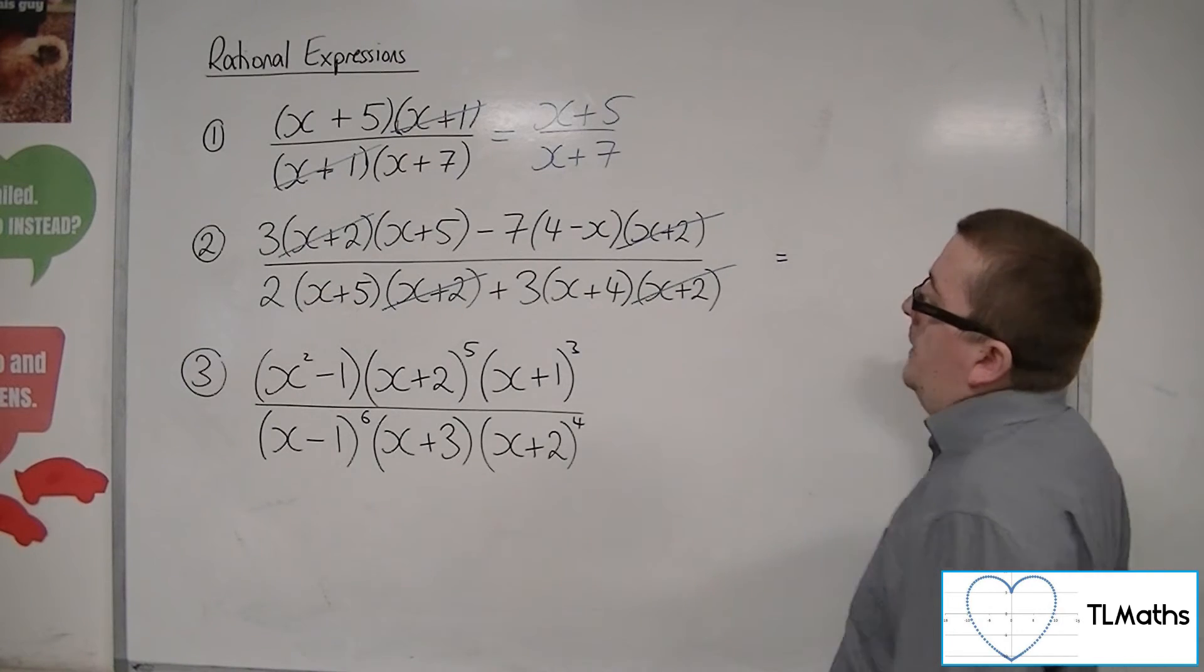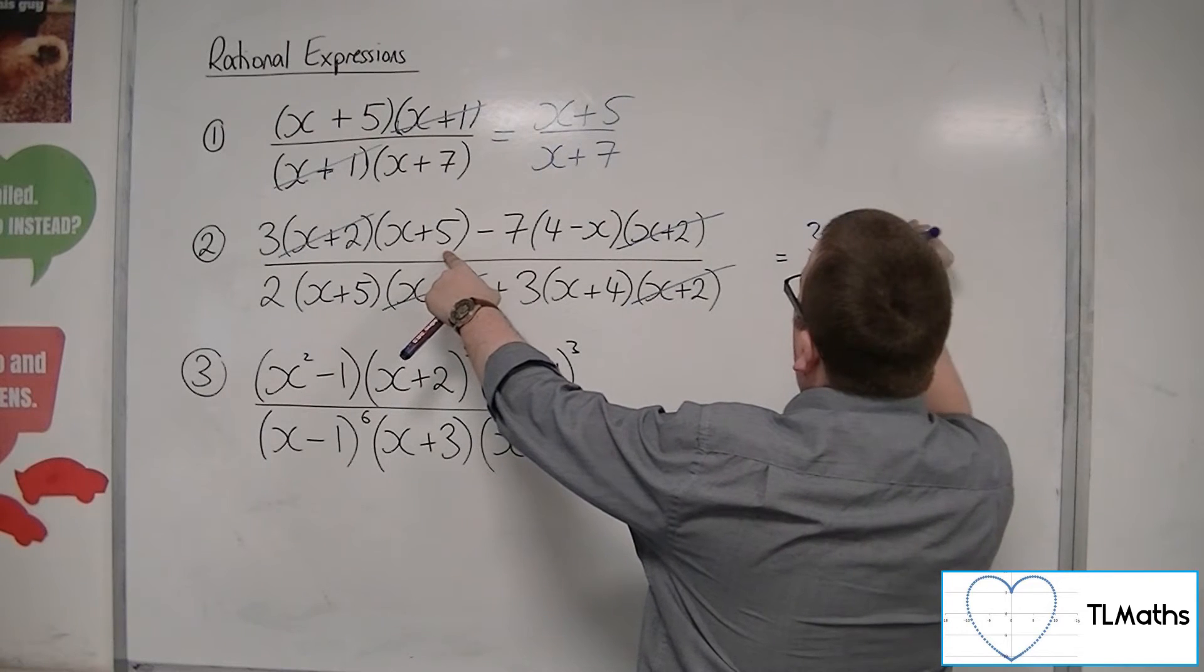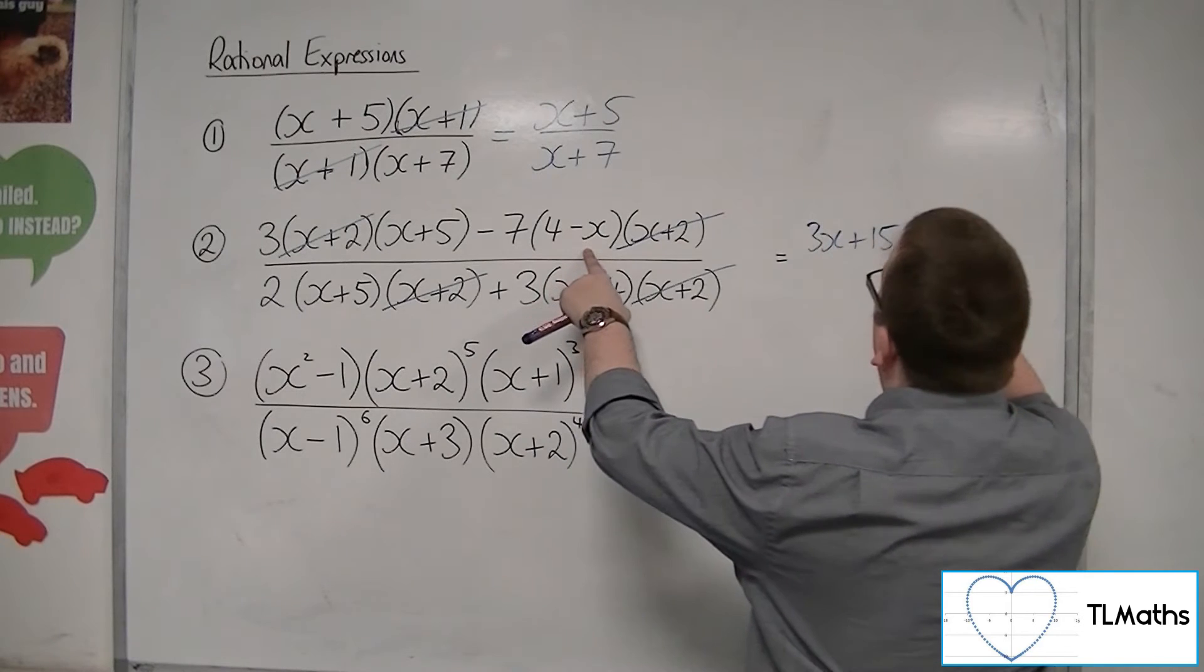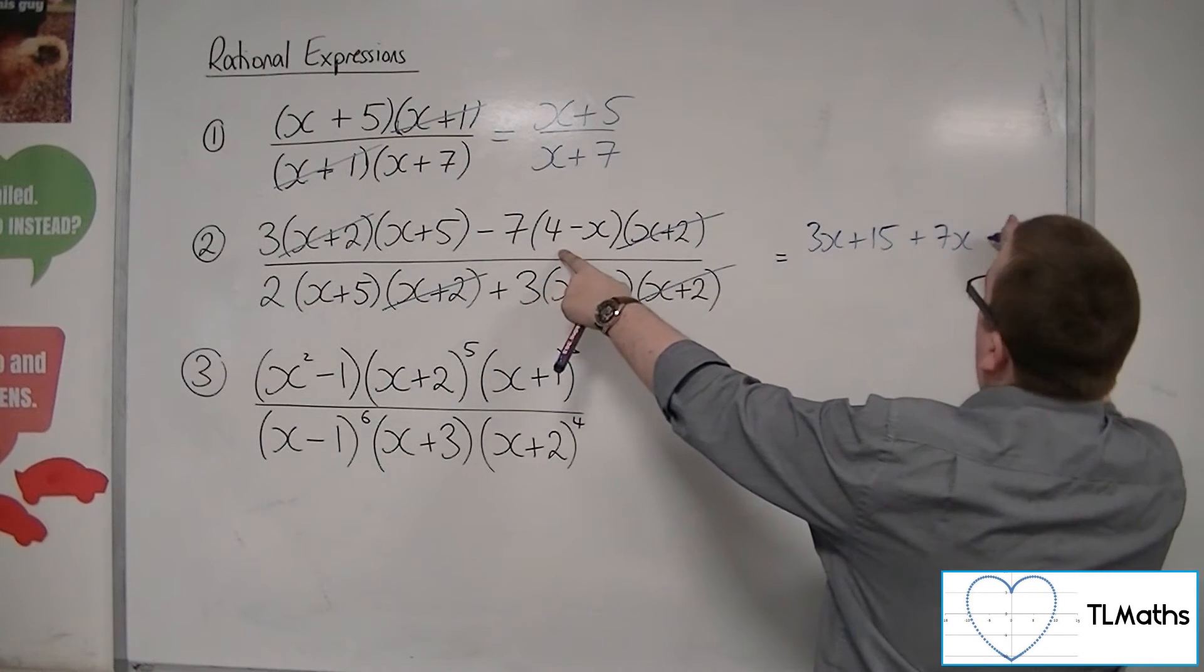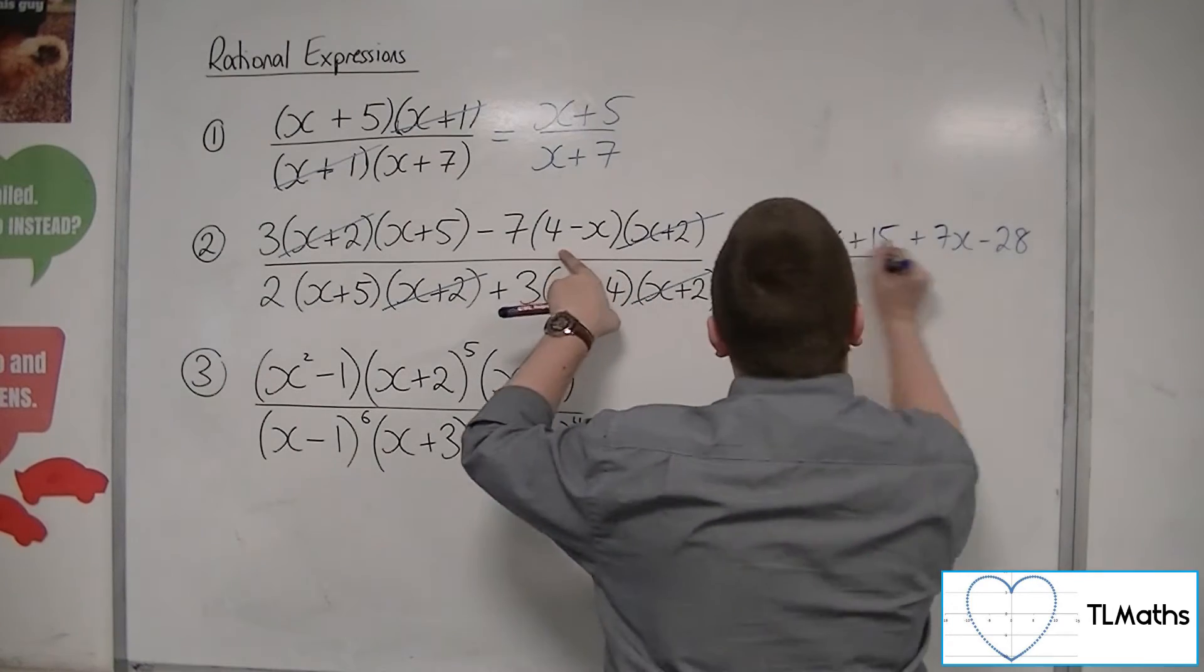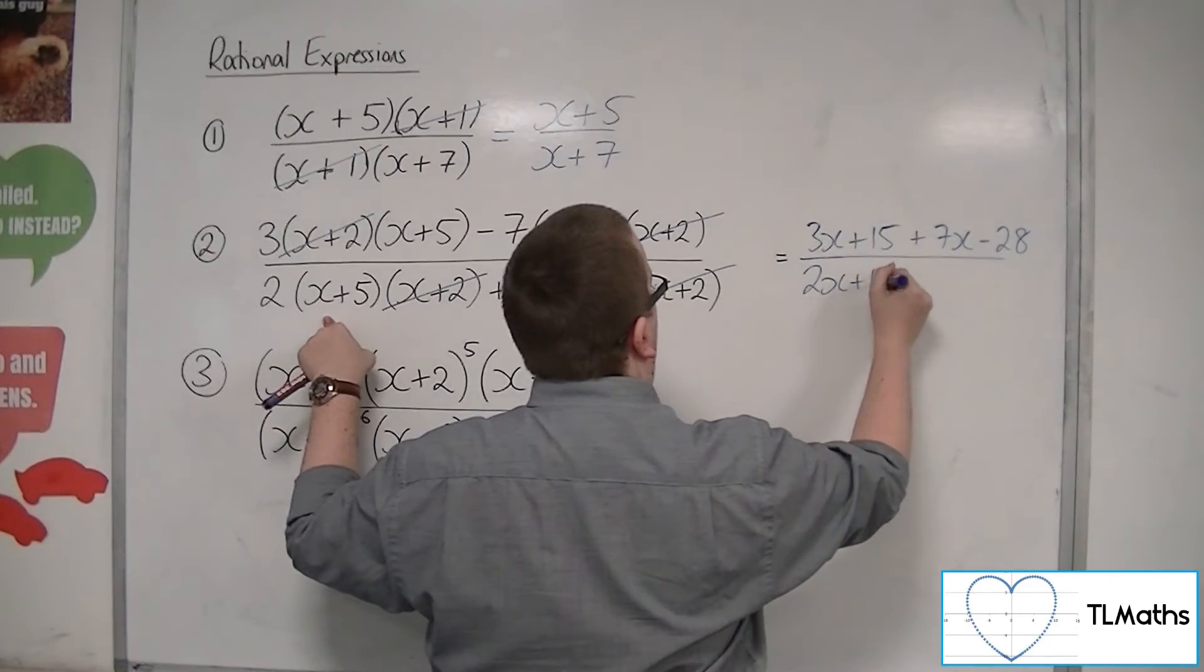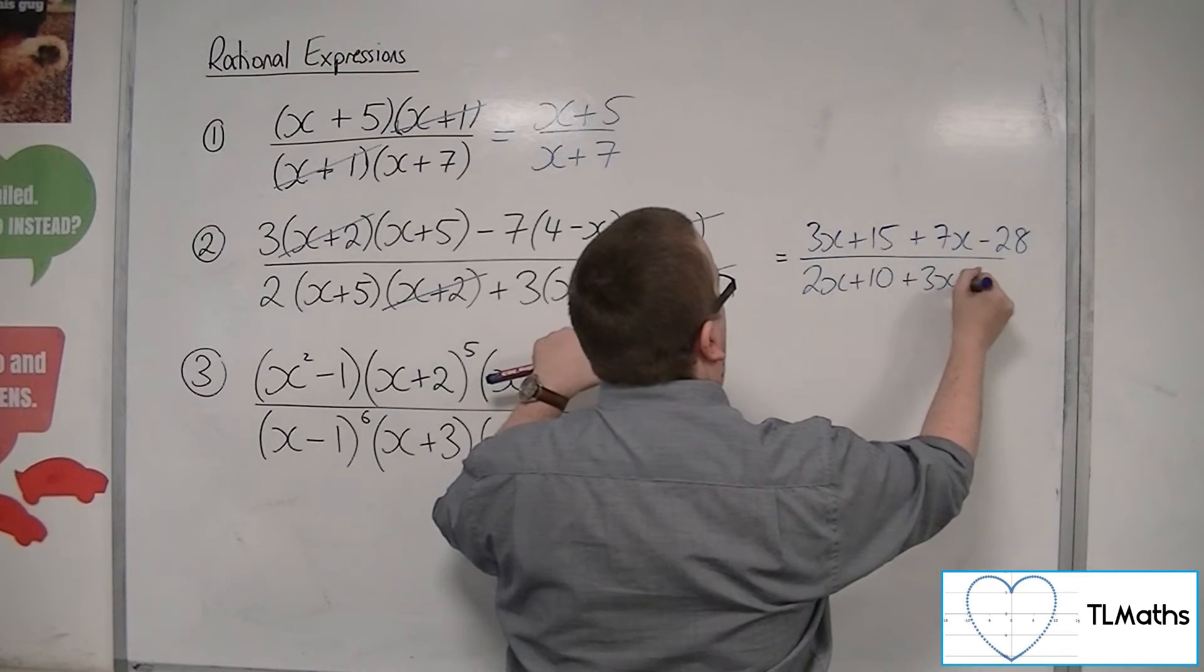So if I multiply out, we've got 3 lots of x plus 5, so 3x plus 15. I've got minus 7 times minus x, so plus 7x. And minus 7 times 4, so minus 28. All over, 2 lots of x plus 5, so 2x plus 10. And 3x plus 4, so 3x plus 12.